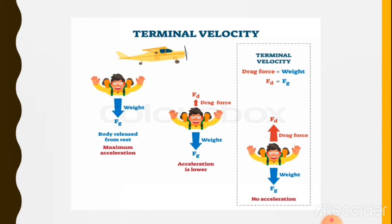This image shows the concept of terminal velocity. When a man jumps from an aeroplane with a parachute, the man's weight acts in a downward direction due to gravitational force, while at the same instant some drag force holds him in the air. There is one point at which the man remains in a suspended condition when Fg becomes equal to Fd or Fr.